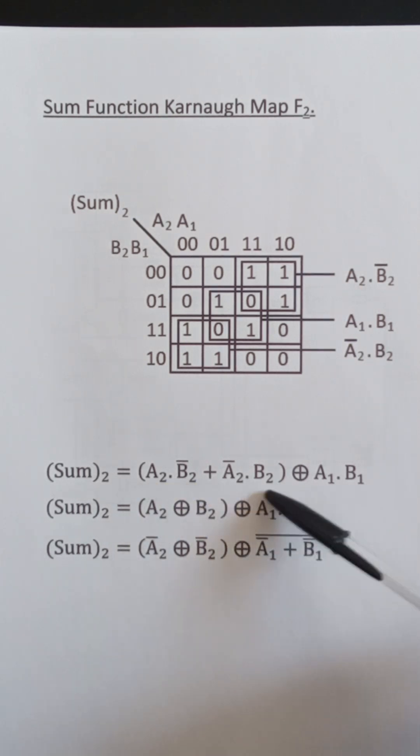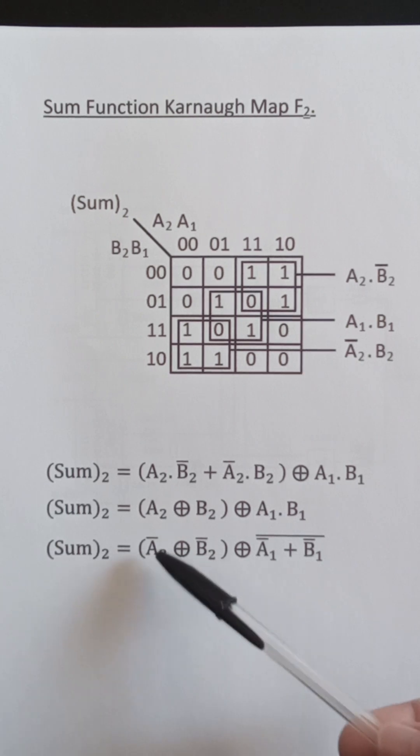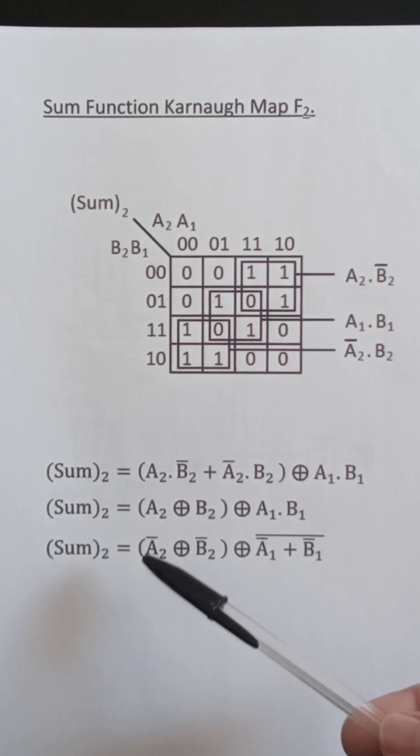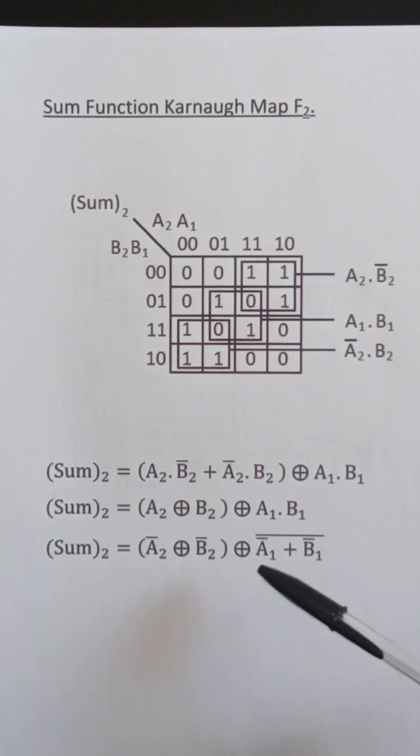Now this is the definition of the exclusive or gate so that equals A2 exclusive or B2 exclusive or A1 and B1. Again if you complement both the inputs it performs the same function so that becomes not A2 exclusive or not B2. And I'm using De Morgan's theorem here to change this AND into a NOR. So that is not A1 nor not B1. So that's the expression for sum2.